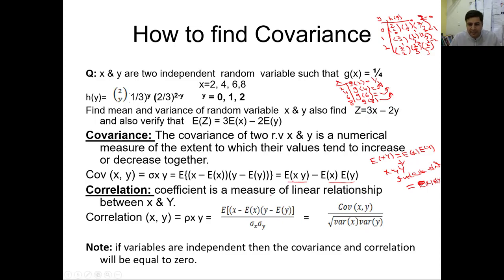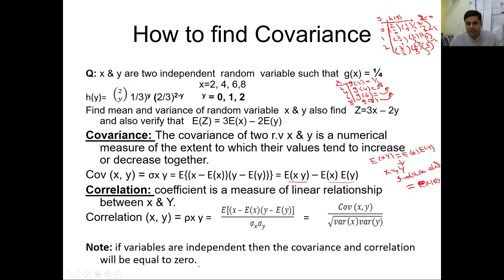Correlation is the measure of linear relationship between x and y. Using the correlation formula — which involves E(xy) divided by the standard deviations of x and y — I will show how to calculate it in an example. Once again, you need to note: if variables are independent, then covariance and correlation will be equal to 0.